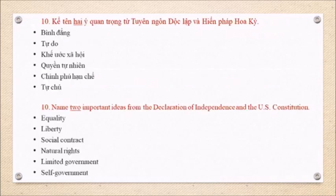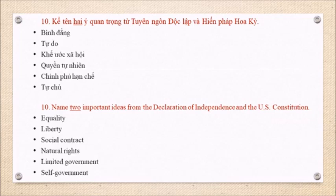Question 10: Name two important ideas from the Declaration of Independence and the U.S. Constitution. Equality. Liberty. Social contract. Natural rights. Limited government. Self-government.